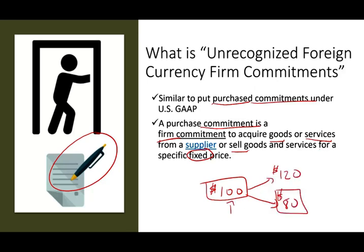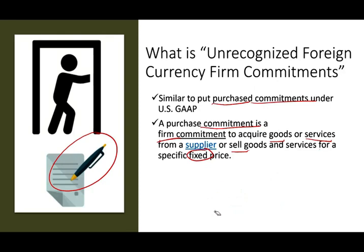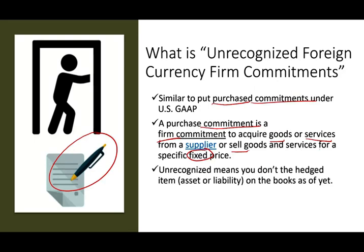How does a firm commitment factor into this picture? You might sell goods and receive foreign currency, or buy goods and need to pay in foreign currency. But here, you did not actually buy or sell yet — you just made a commitment. So it's 'unrecognized' because you don't have any asset or liability on the books. You don't have a receivable or payable exposure. You just made a commitment, and you're hedging that commitment to protect it.